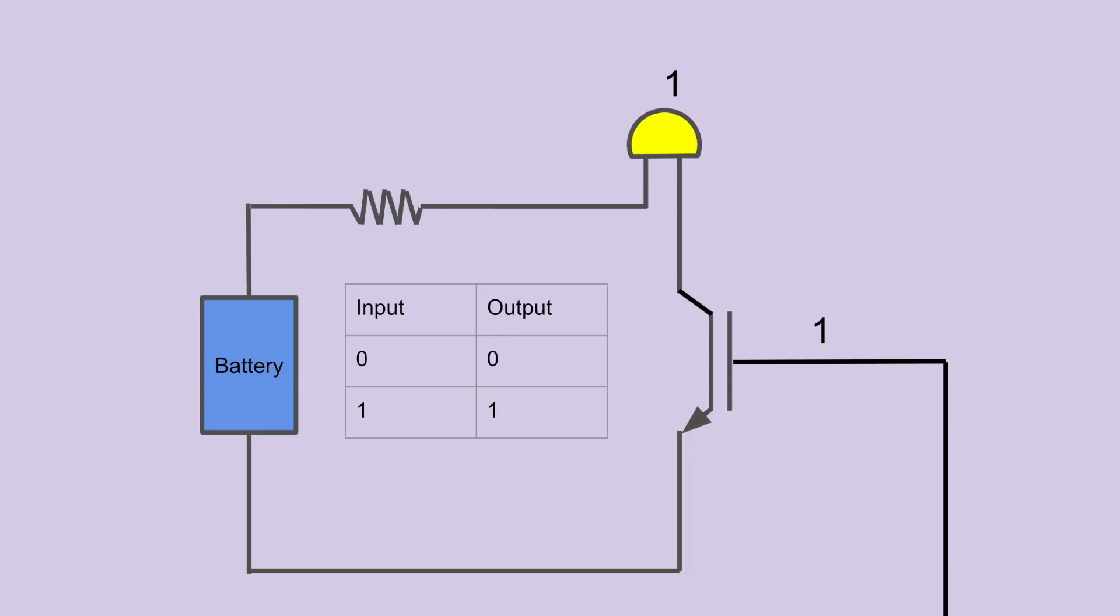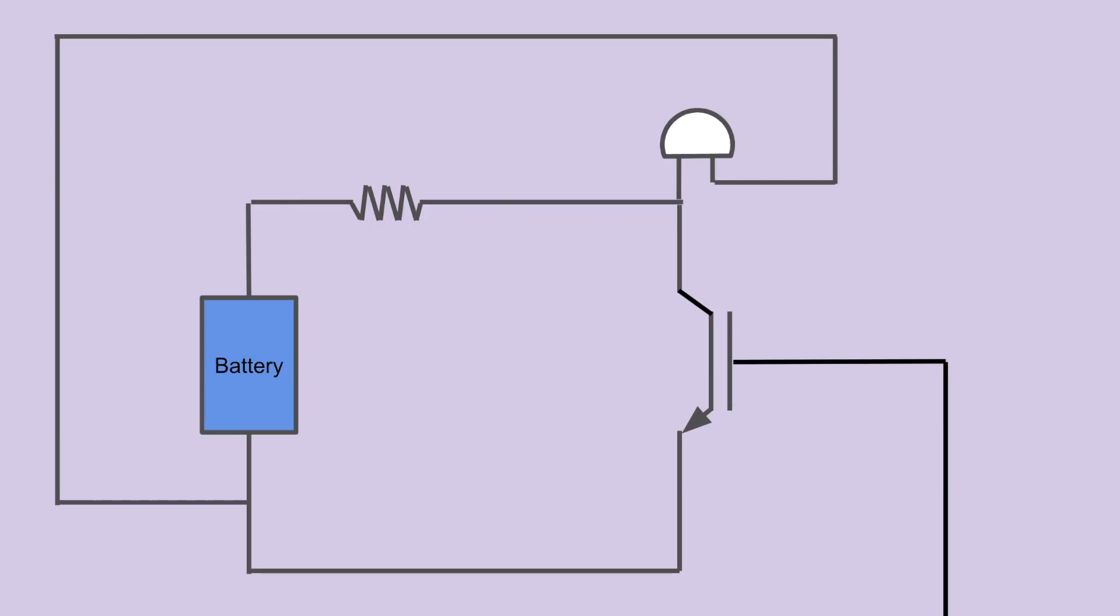This isn't a very exciting result, but what if we wire the circuit differently, like this? Now if the transistor switch is open, the current only has one path to travel, and that's across the light bulb. If the switch is closed, then the current takes the path of no resistance, and the light bulb stays off.